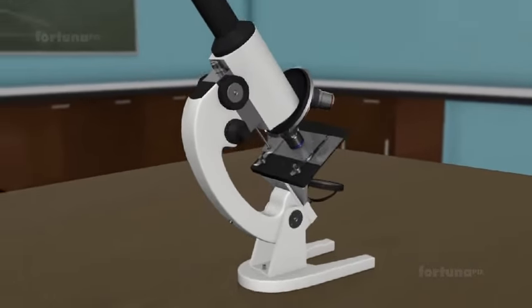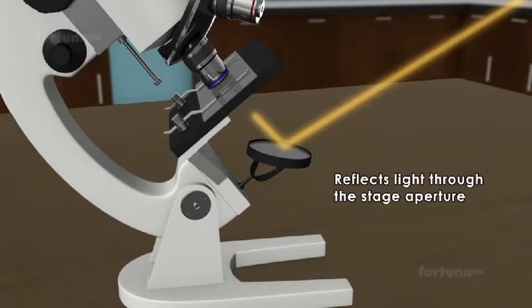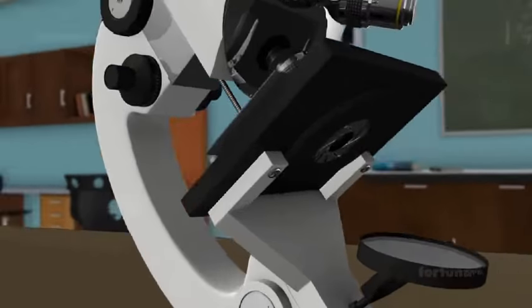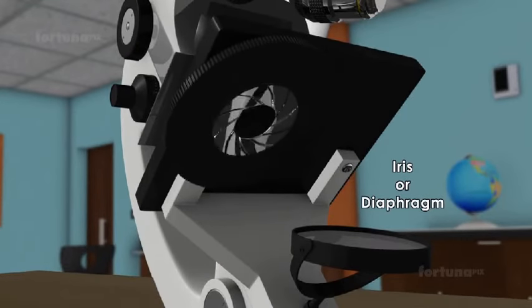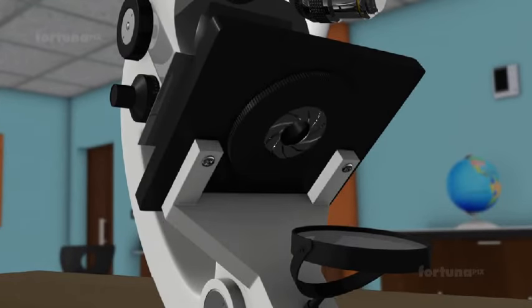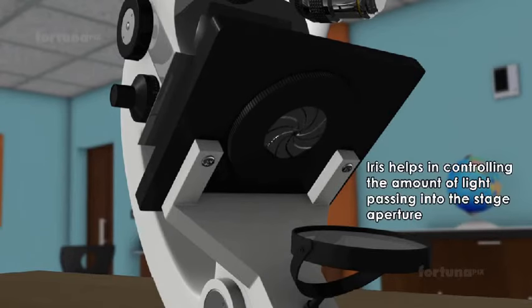A small mirror at the base of the microscope reflects the light through the stage aperture. Above the mirror, an iris, also known as a diaphragm, is present. The iris helps in controlling the amount of light passing into the stage aperture.